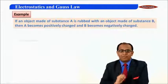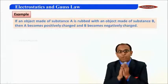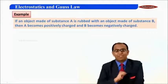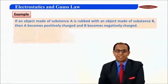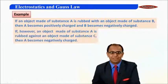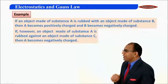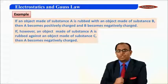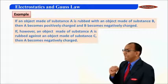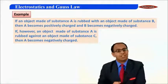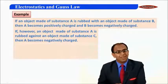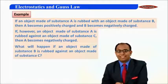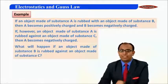If an object made of substance A is rubbed with an object made of substance B, then A becomes positively charged and B becomes negatively charged. If however an object made of substance A is rubbed with an object made of substance C, then A becomes negatively charged. We have to tell what will happen when B and C are rubbed with each other.